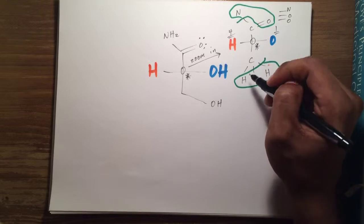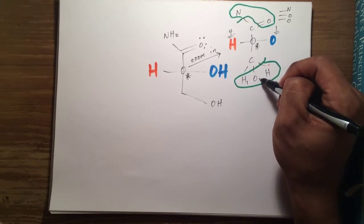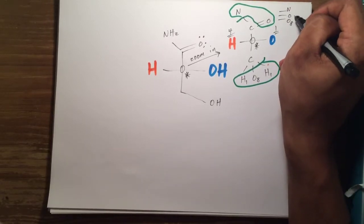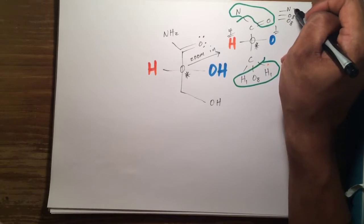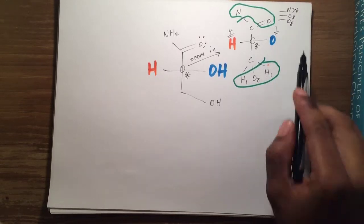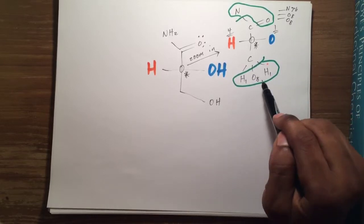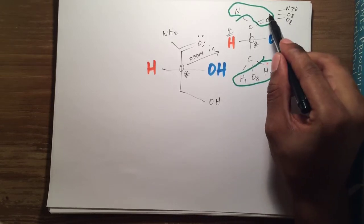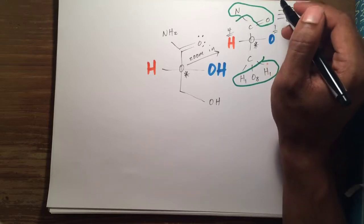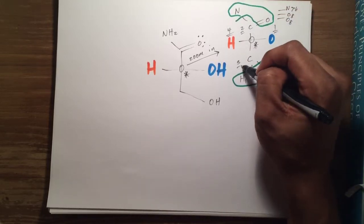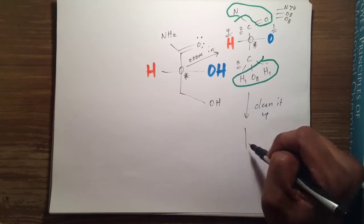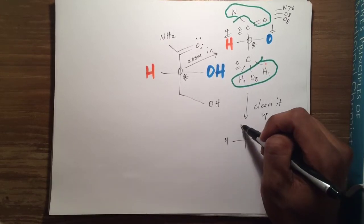When we rank priorities based on atomic number: hydrogen is one, oxygen is eight, and nitrogen is greater than six. Looking at the atoms connected — one side has oxygen, oxygen, and nitrogen (8, 8, >6), and the other has hydrogen, oxygen, and hydrogen (1, 8, 1). Adding these numbers, 8+8+6 is greater than 1+8+1, so the carbon with the double-bonded oxygen and nitrogen is higher priority — that's priority two, and the CH₂O group below is priority three. Cleaning it up, we write: one, four, two, and three.